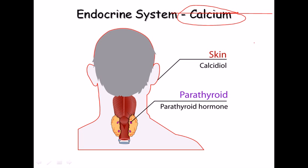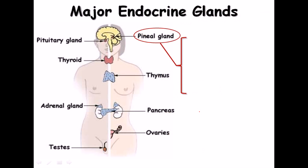The endocrine system also involves calcium regulation, since calcium is important for nerve impulse transmission. The parathyroid is a small endocrine gland located just adjacent to the thyroid gland. The parathyroid gland secretes parathyroid hormone, which requires calcium for proper function.